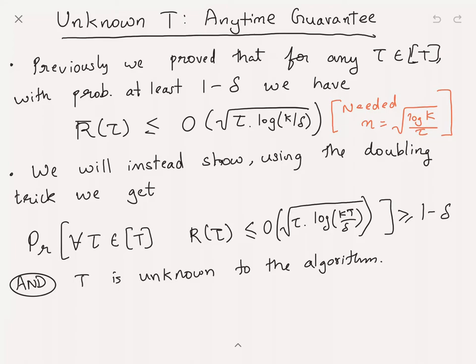Let's look at the first assumption: the unknown time step T. This is also sometimes called an anytime guarantee. Previously, what we proved is that if you fix a time step tau in T, then with probability at least 1 minus delta, the regret up till the first tau time steps R(tau) is at most sqrt(tau * log(k/delta)). Critically, to achieve this regret the hedge algorithm needed to know the learning rate eta, and this learning rate depended on tau: eta = sqrt(log(k) / tau).